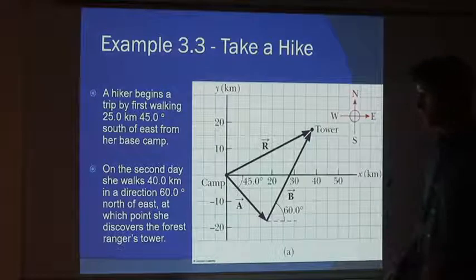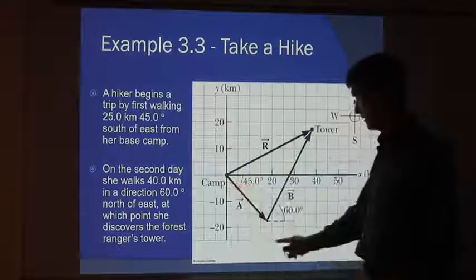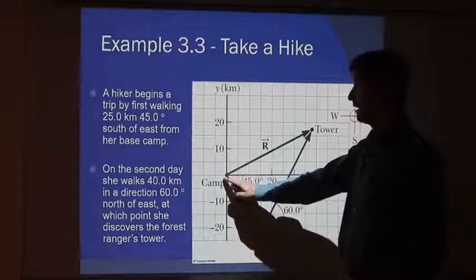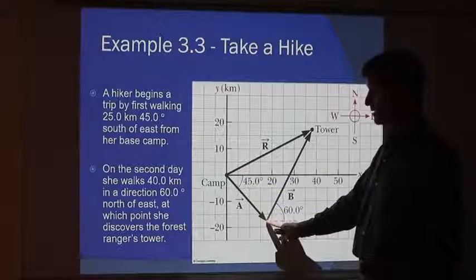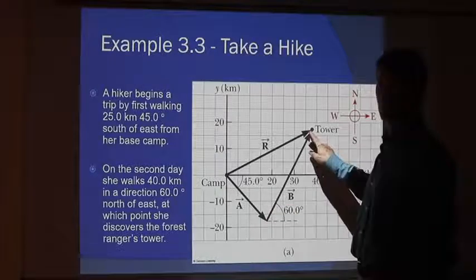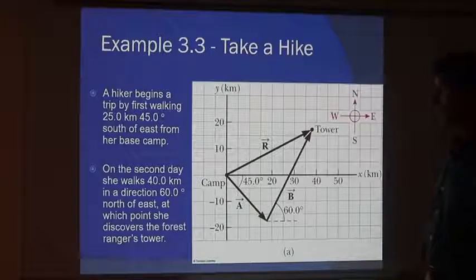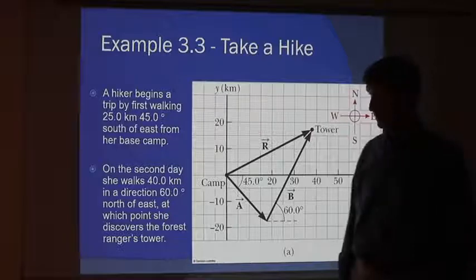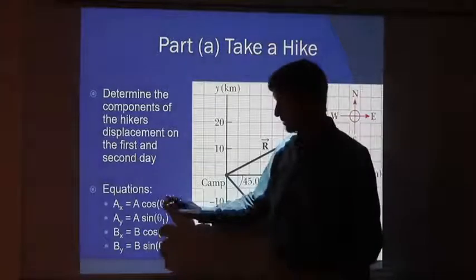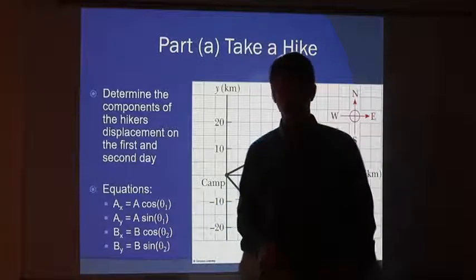Alright, here's an example. A hiker begins a trip first walking 25 kilometers at a 45 degree angle south of east from base camp. Then, on the second day, she walks 40 kilometers, 60 degrees north of east to a tower. What's the total resultant right here? Well, what I need to do is find the x components of each vector, find the y components of each vector, and then add everything together.